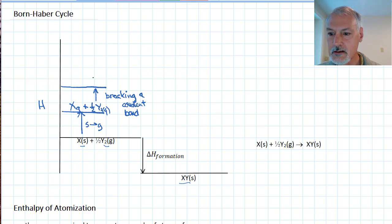At this point now, I have Y gas as an individual atom, and I have X gas as an individual atom. Now I'm going to remove an electron from X gas to turn it into an ion. So, we'll ionize it by removing an electron.